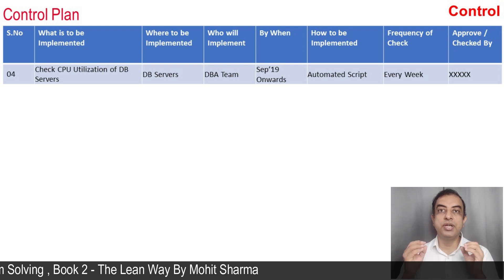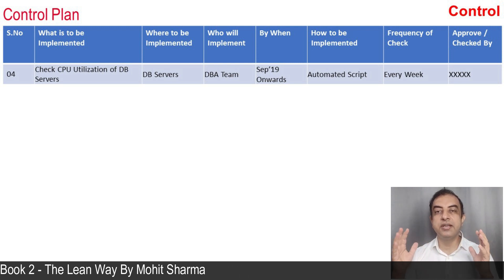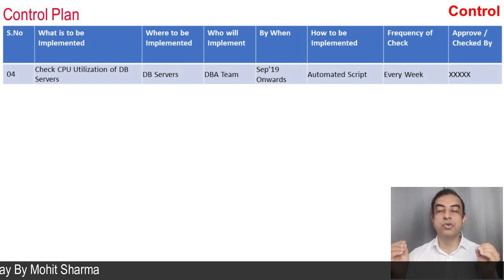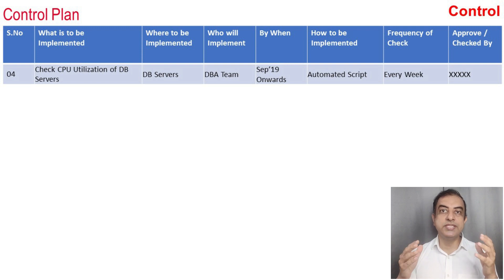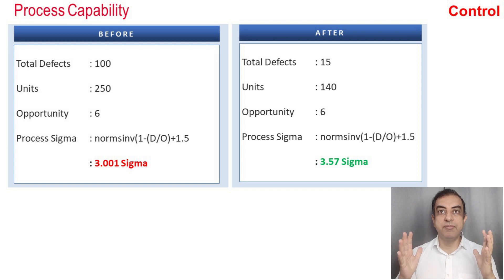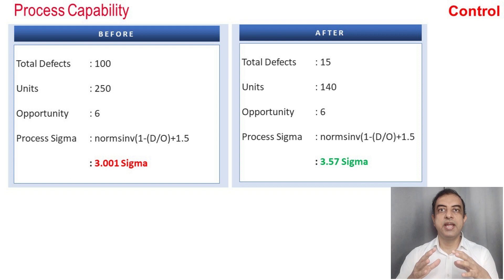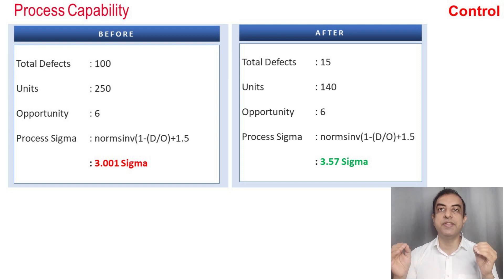As the team moved into the Control phase, they created a detailed control plan to ensure the process remained in control. In the control plan, it is mentioned in detail what is to be implemented, where to implement, who will do it, and by when. Similarly, the process to implement the control — with frequency and approver — is also provided. After implementing all solutions, process capability was checked and it improved from 3.01 sigma to 3.57 sigma.